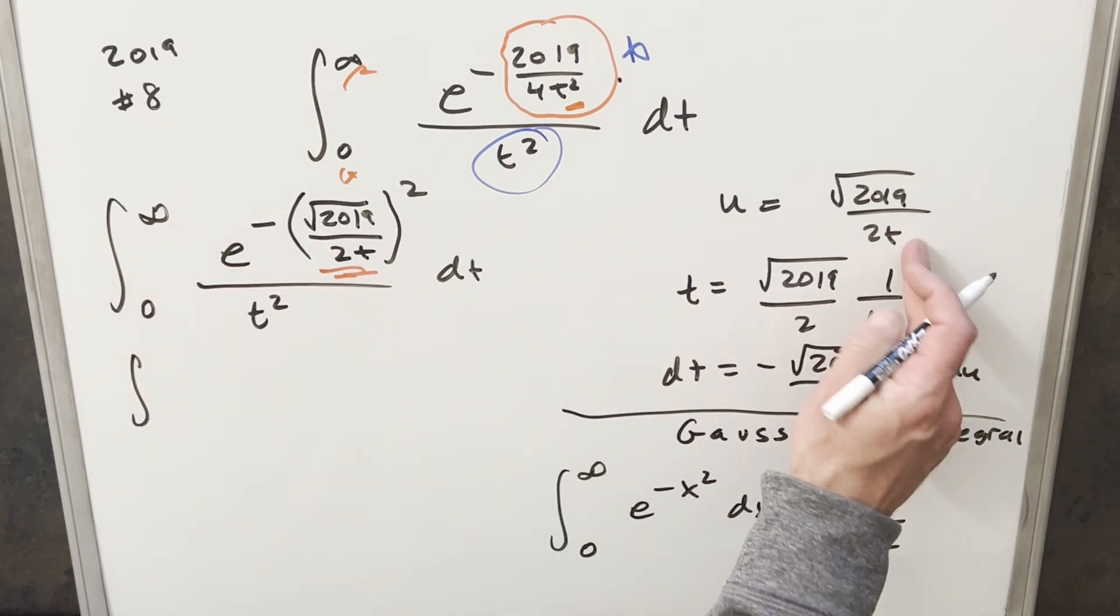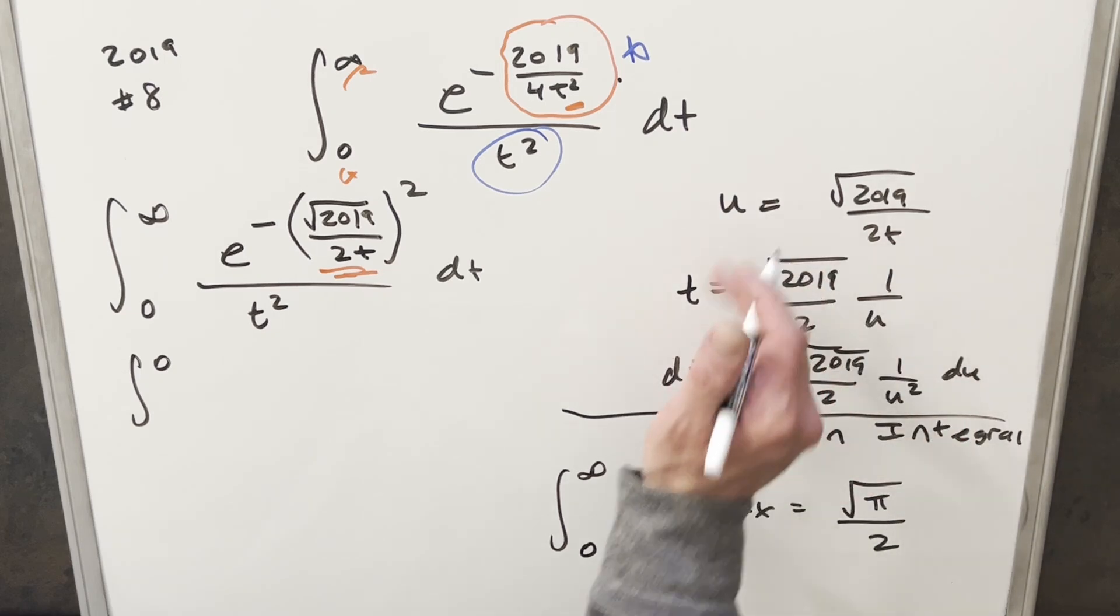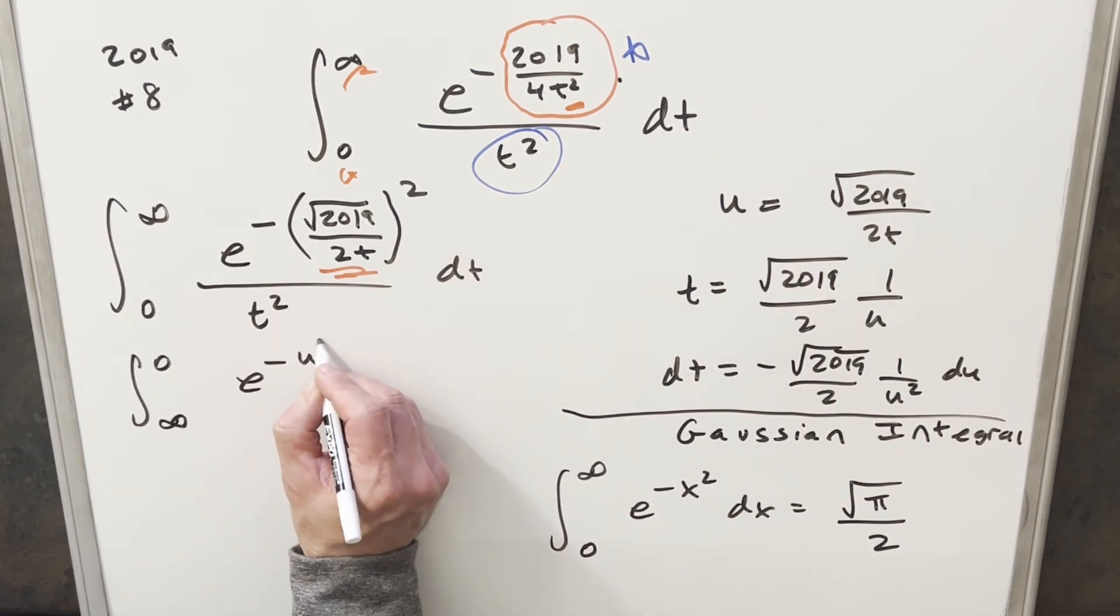So first taking infinity, plug infinity in here. And now this upper bound is going to 0. Plug 0 in here. And now u is going to infinity. What we have here is all going to become e minus u squared.